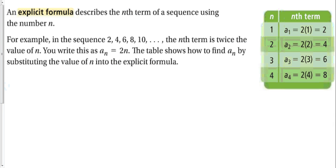An explicit formula describes the nth term using the number n. So basically what an explicit formula is, is a formula to get any number of n that we want at any time.